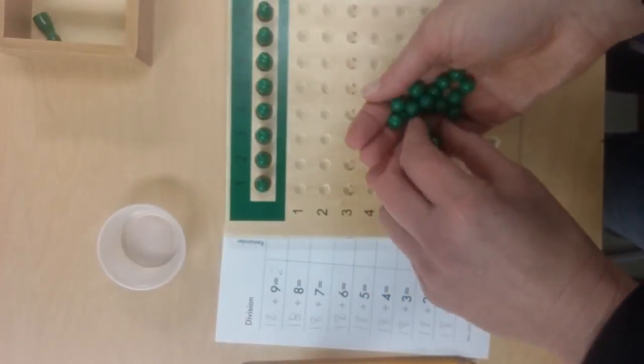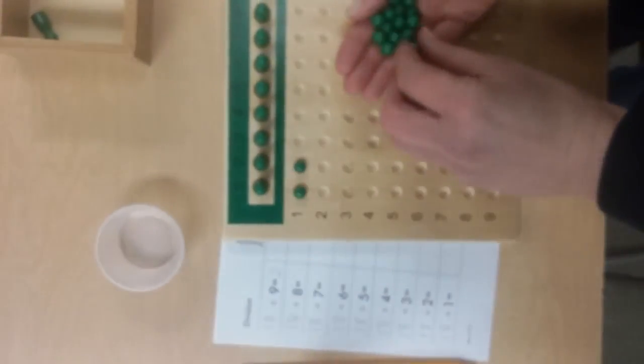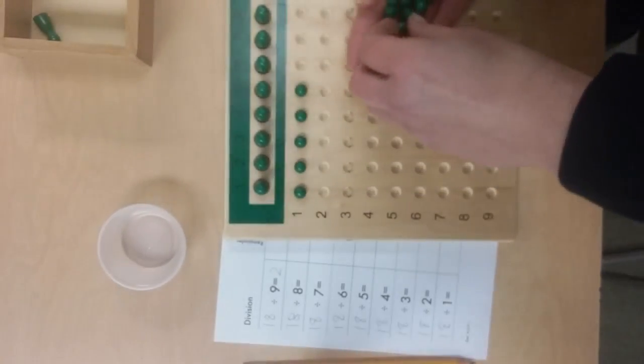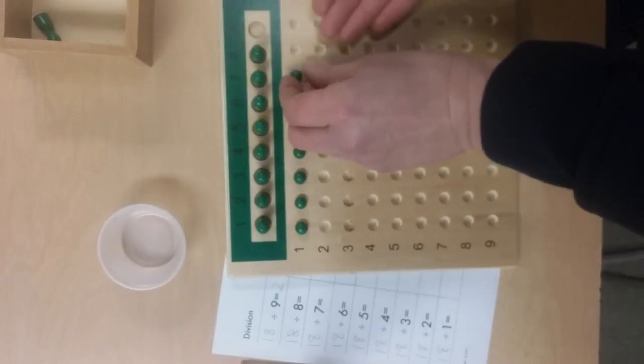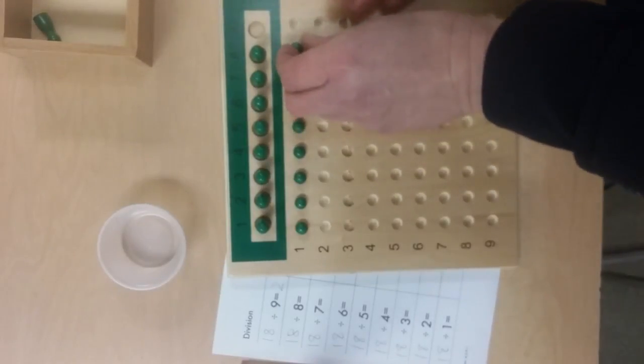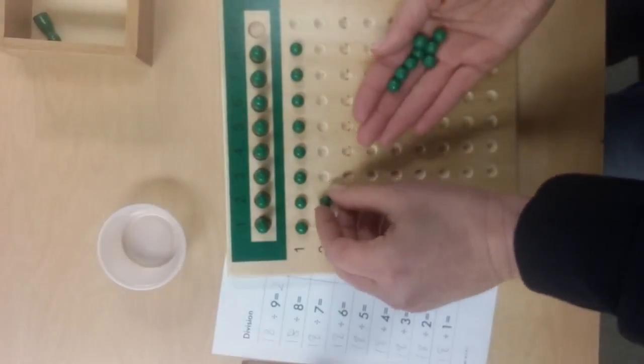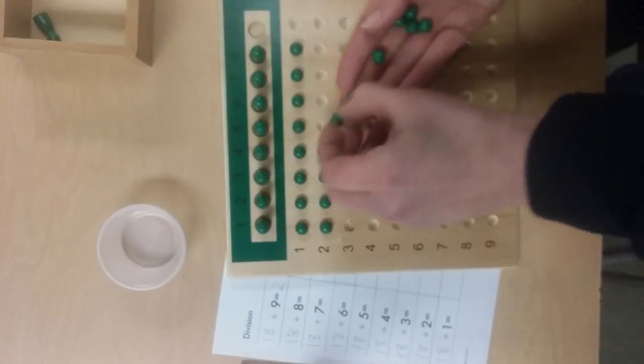There's no ninth skittle because the divisor is 8. We still have some left over, so we'll distribute again until we get to the end. Then your students are going to discover that there's not enough to distribute a complete third row.